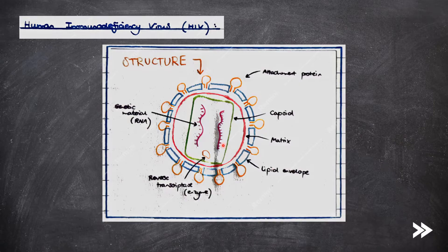So we have genetic material, which for HIV is RNA. We have a reverse transcriptase enzyme, which we'll talk about in just a moment. There's a lipid envelope and also a matrix. There is a capsid, as well as attachment proteins, which allow the virus to bind to complementary receptor proteins on the surface of T helper cells.